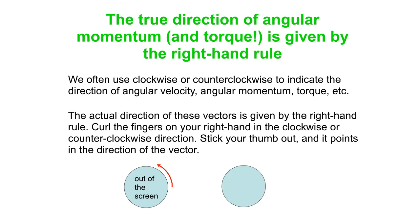On the other hand, if that disk is rotating clockwise, you turn your hand around so your fingers curl clockwise, point your thumb out, and your thumb points into the screen. That is the true direction of the angular velocity and angular momentum for a disk rotating clockwise. So that's it for our brief introduction to angular momentum.